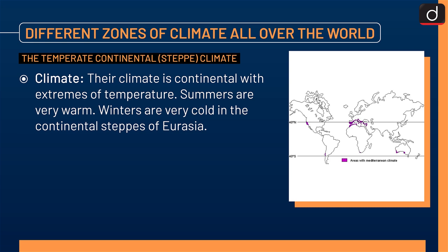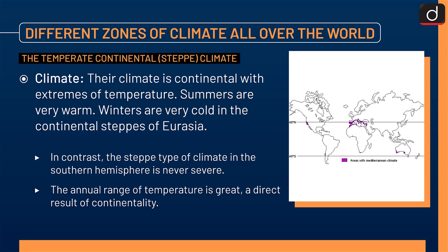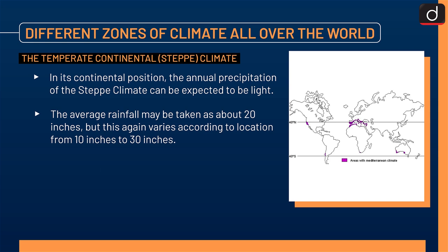Climate: the climate is continental with extremes of temperature. Summers are very warm and winters are very cold in the continental steppes of Eurasia. The annual range of temperature is great, a direct result of continentality. The annual precipitation of the steppe climate can be expected to be light. The average rainfall may be taken as about 20 inches, but this again varies according to location, from 10 inches to 30 inches.